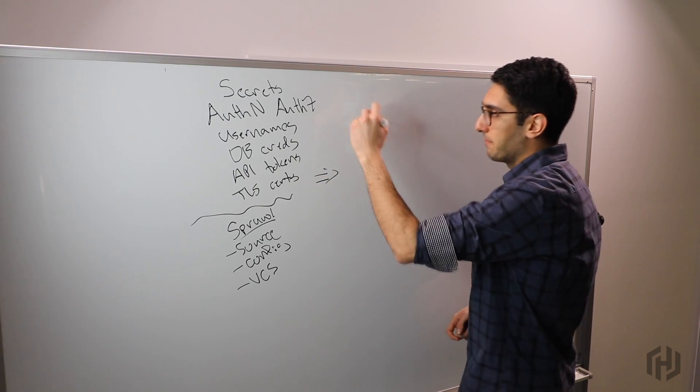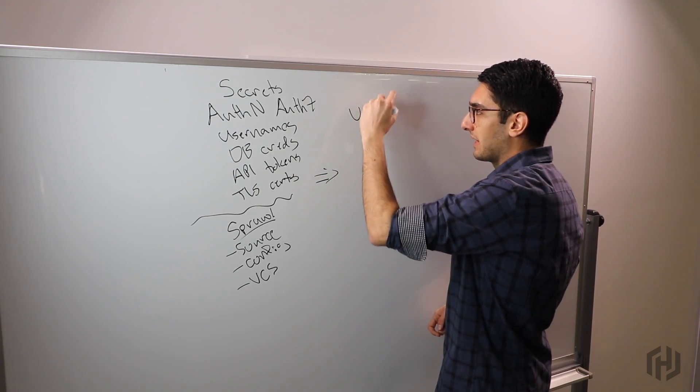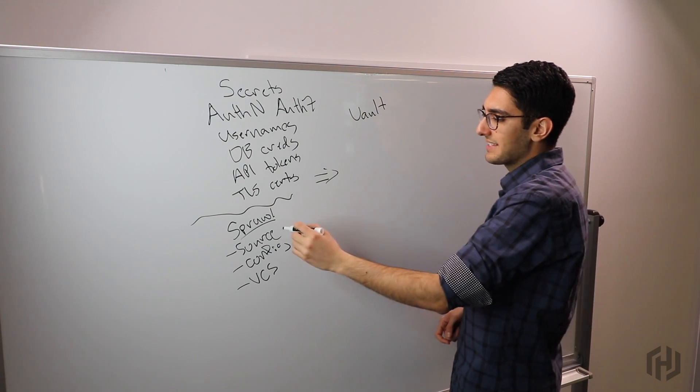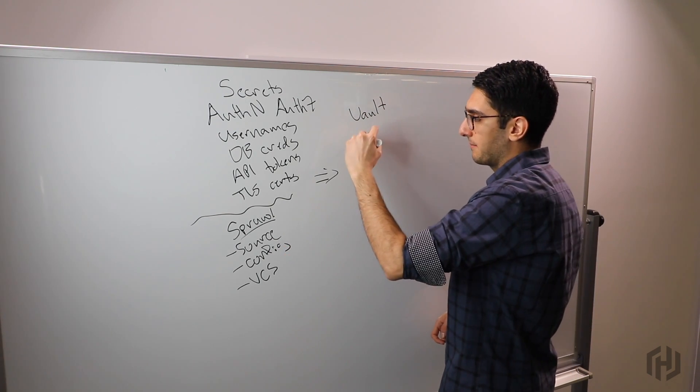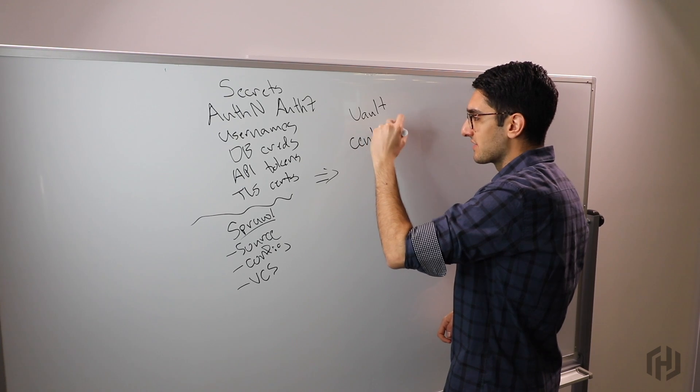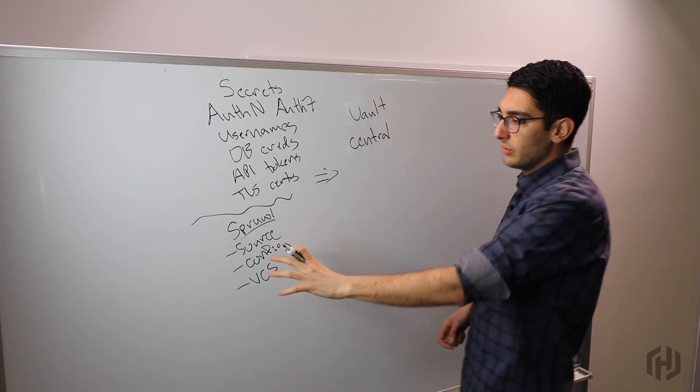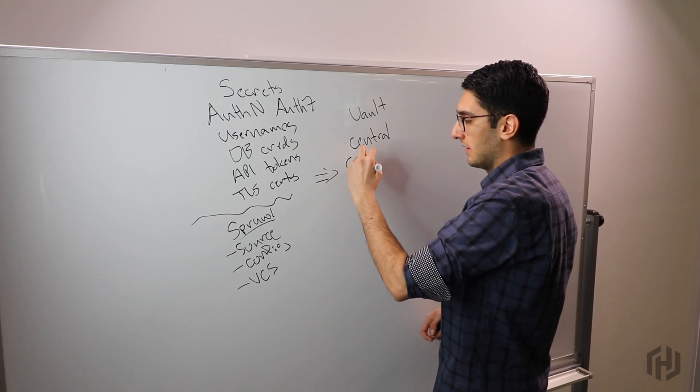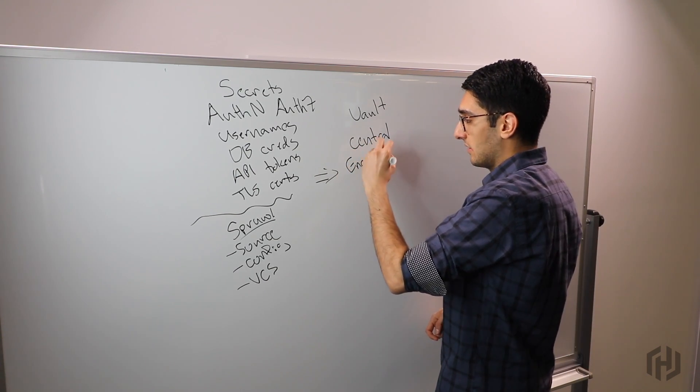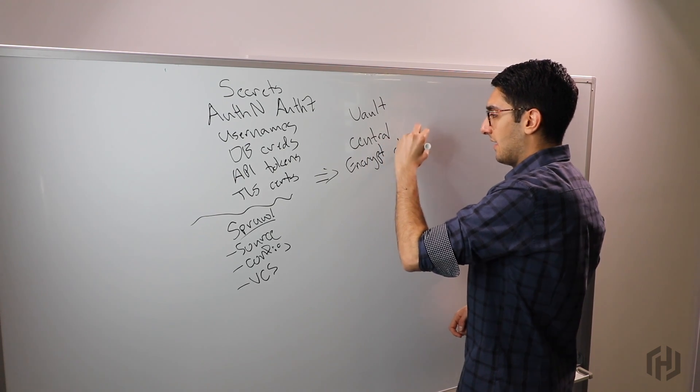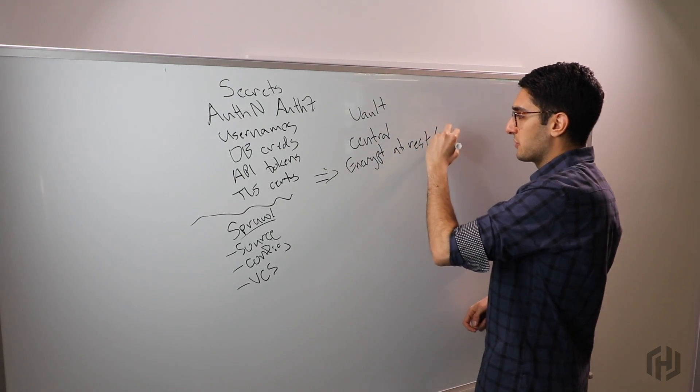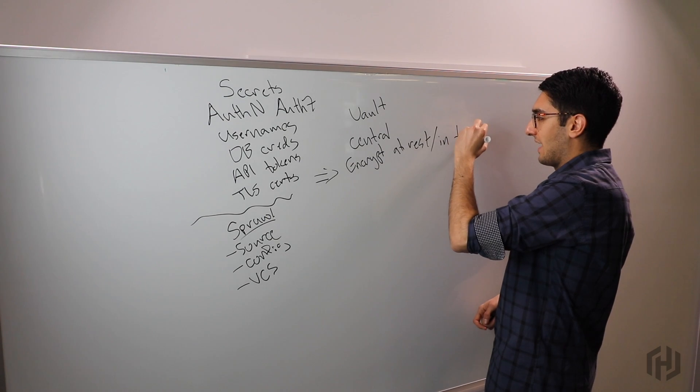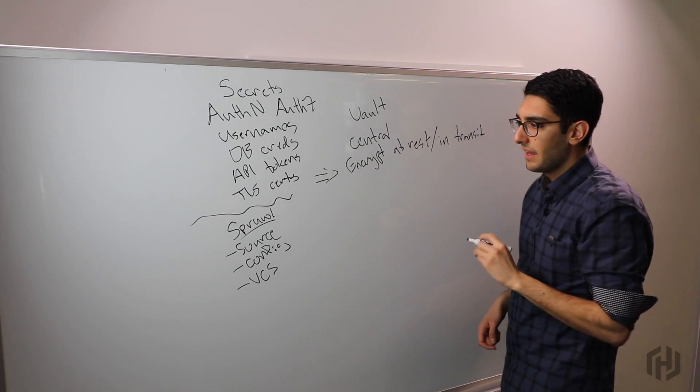One of our first goals when we started working on Vault was to look at this problem and say how can we improve it. Vault really starts by looking at the secret sprawl problem and saying we can only solve it by centralizing. Instead of having things live everywhere, we move all these secrets to a central location. Vault promises to encrypt everything both at rest inside Vault as well as in transit between Vault and any clients.